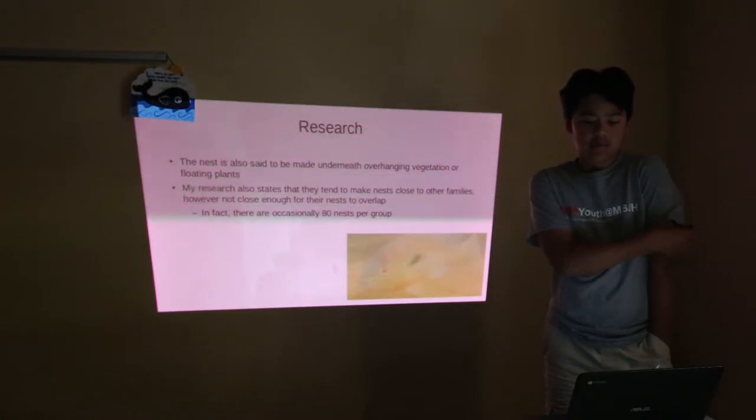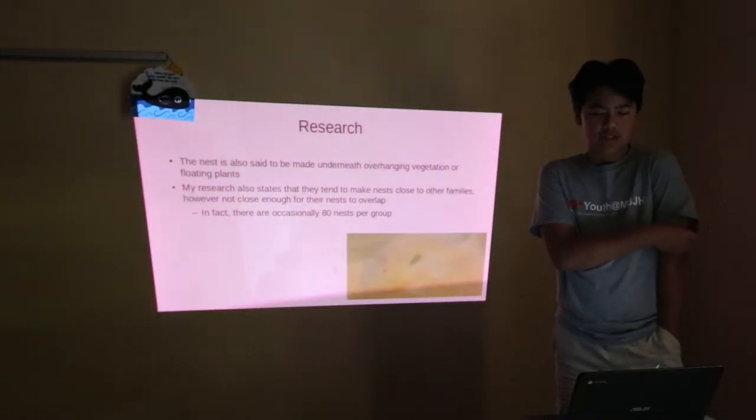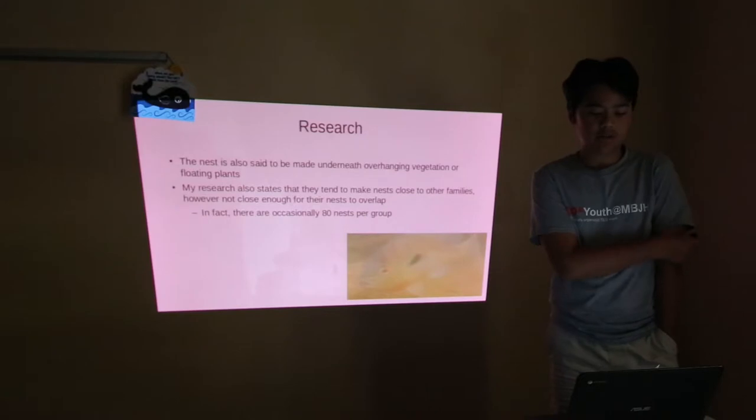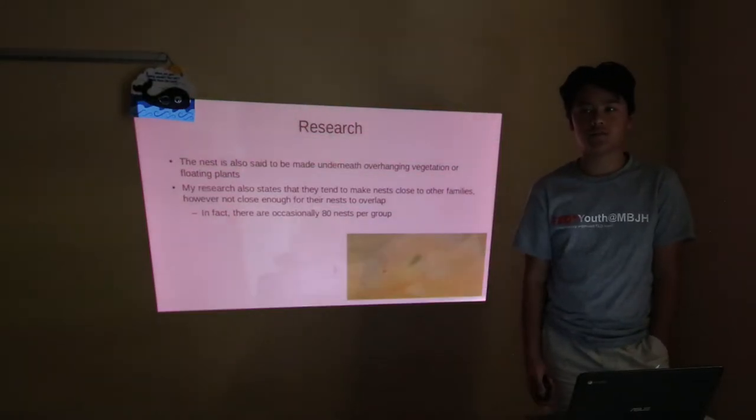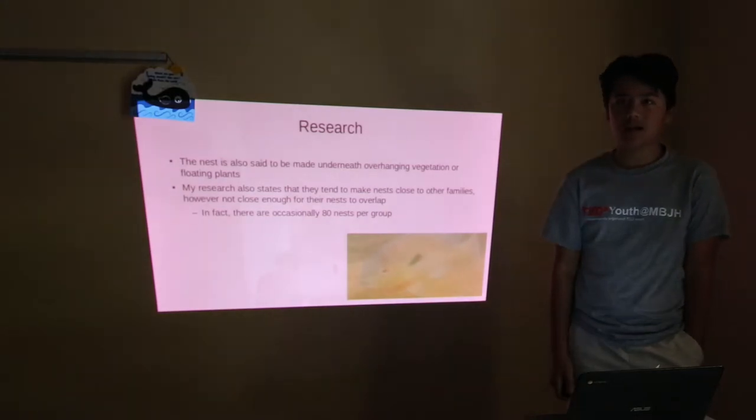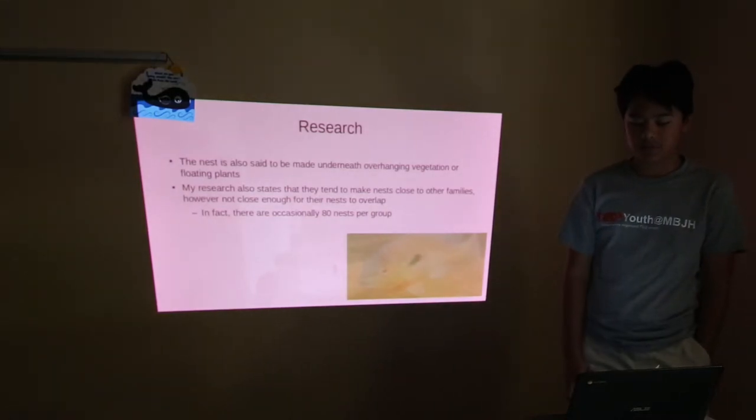The nest is also said to be made underneath overhanging vegetation or floating plants. My research also states they tend to make nests close to other families, however not close enough for their nests to overlap. In fact, there can be up to 80 nests per group of sunfish.